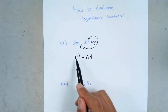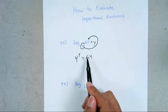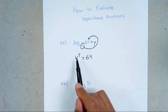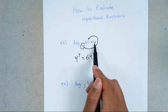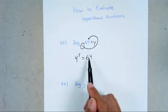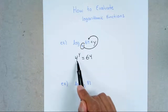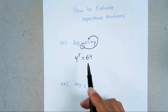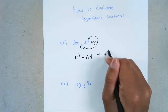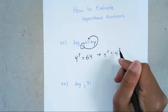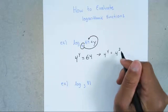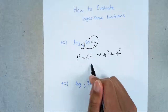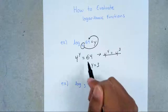What they're asking us is: 4 to what power gives us 64? Maybe you know it right away, and if you do, great. But if you don't, that's fine. The next step after you write 4y equals 64 is to turn your bigger base into your smaller base if you can. 64 can become 4 to the third, so 4y equals 4 to the third. Once you have the same base, cancel them out and you get y equals 3 — that's your final answer.